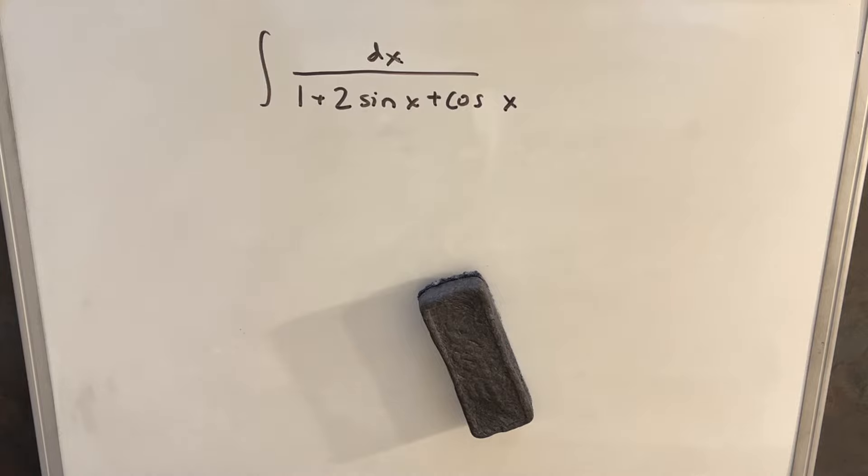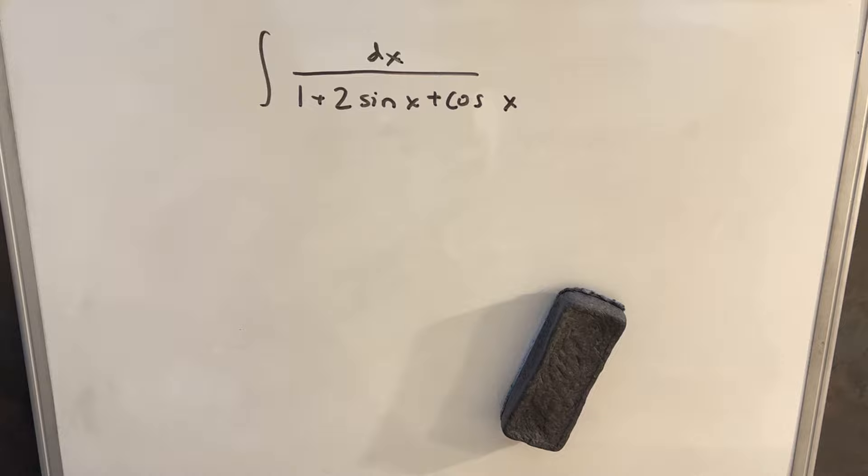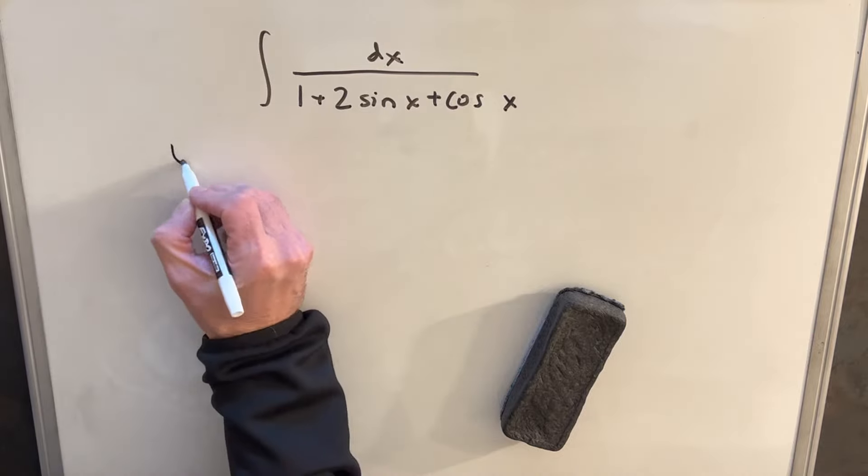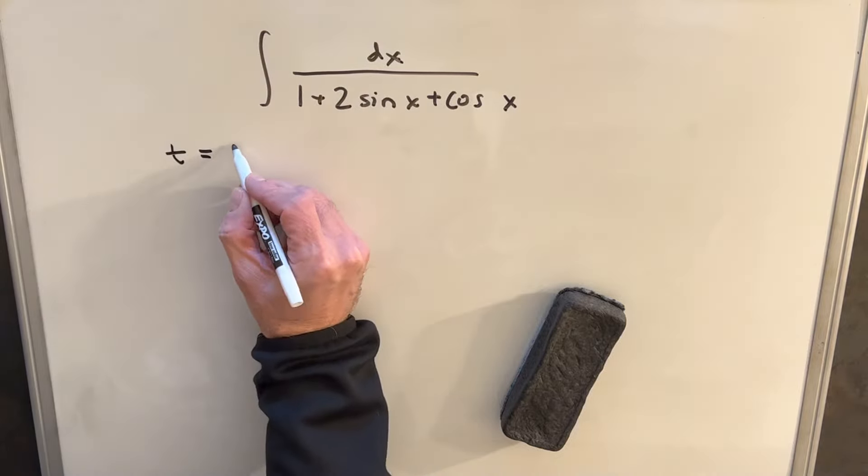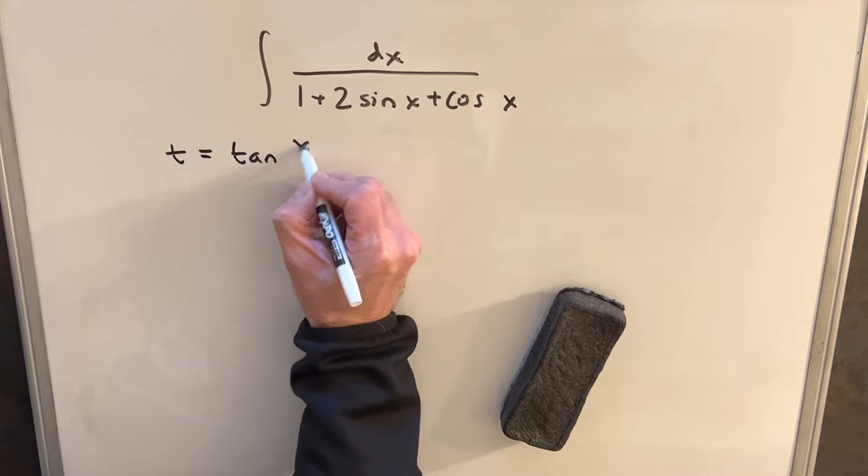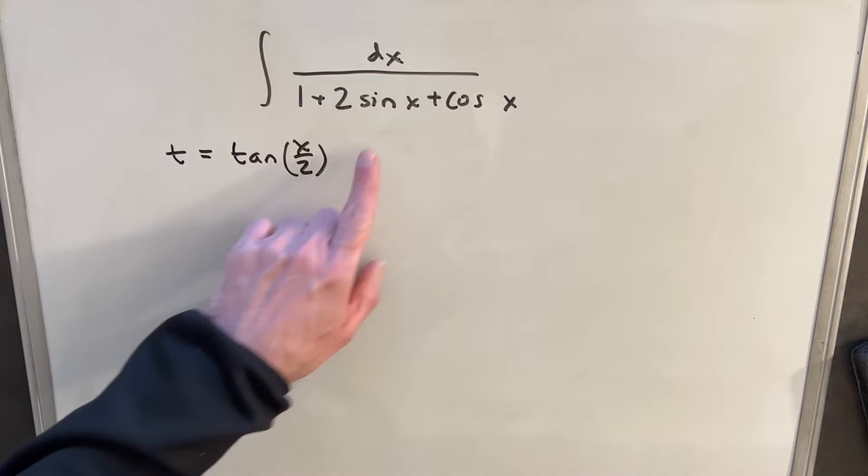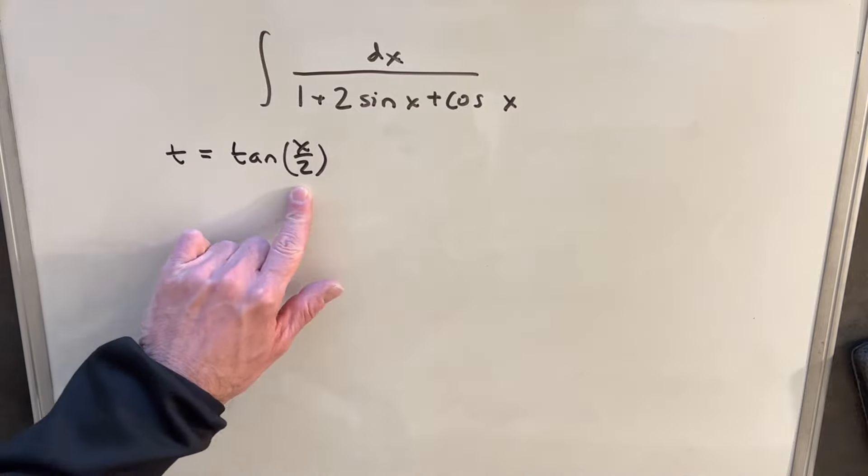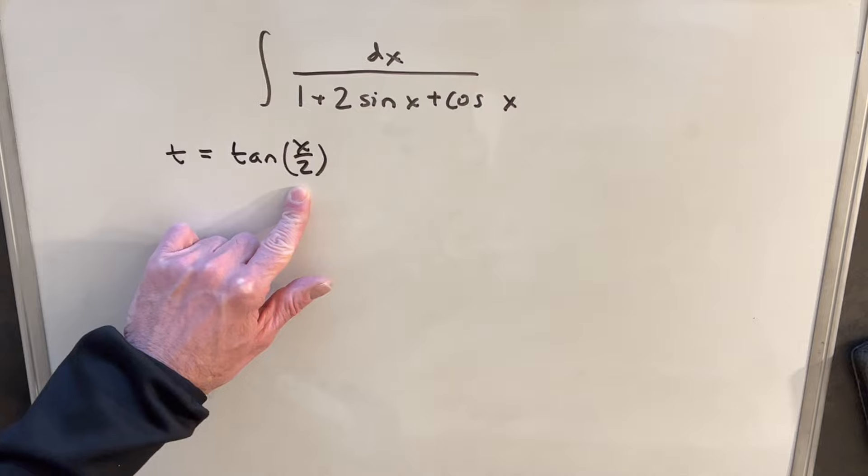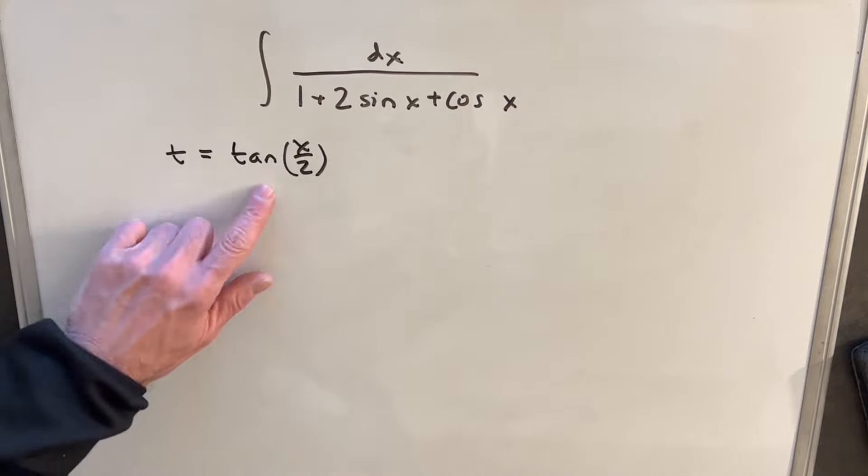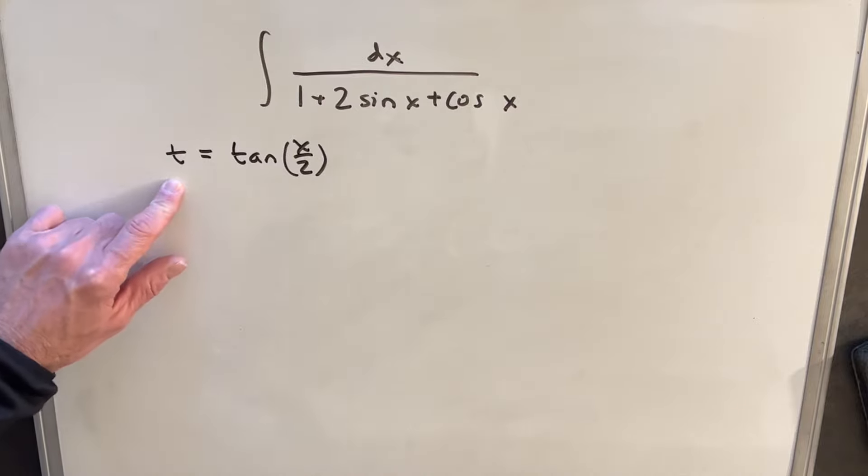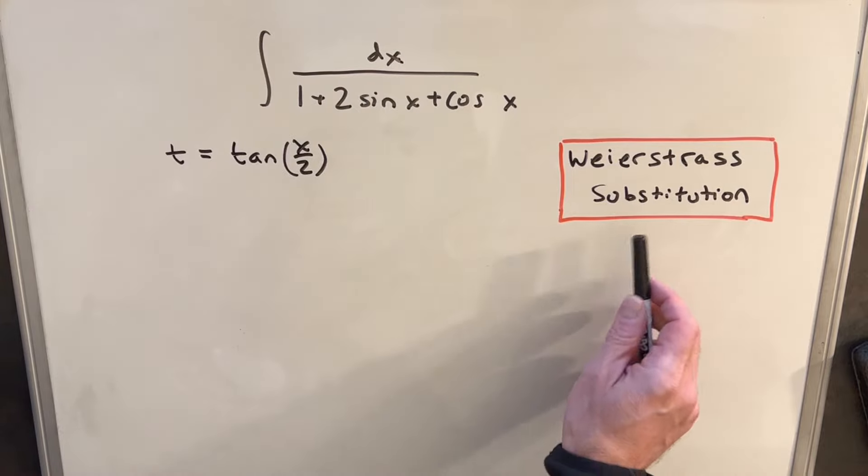But what I did was a particularly interesting substitution where I set t equal to tan of x over 2. So at this point, you might think this is really counterintuitive, right? Because I'm making a substitution where I don't have tan in the expression, and I don't have anything x over 2. So I don't have anything like this, and I'm substituting for that. So what I'm trying to do here is what's called a Weierstrass substitution.